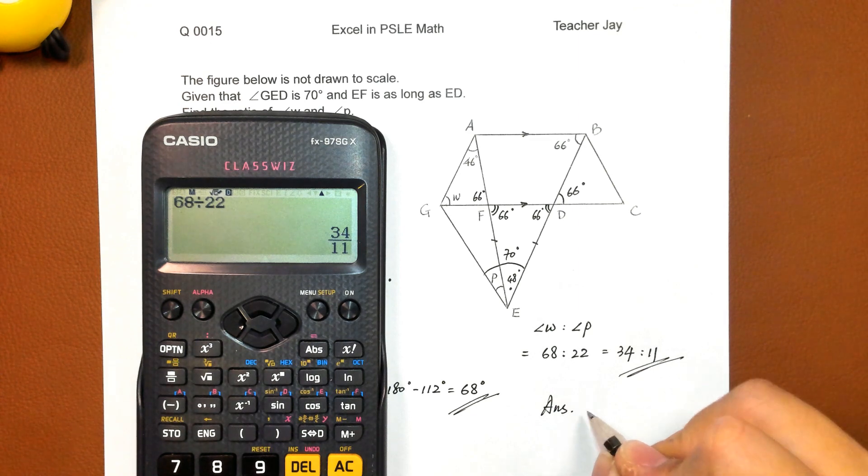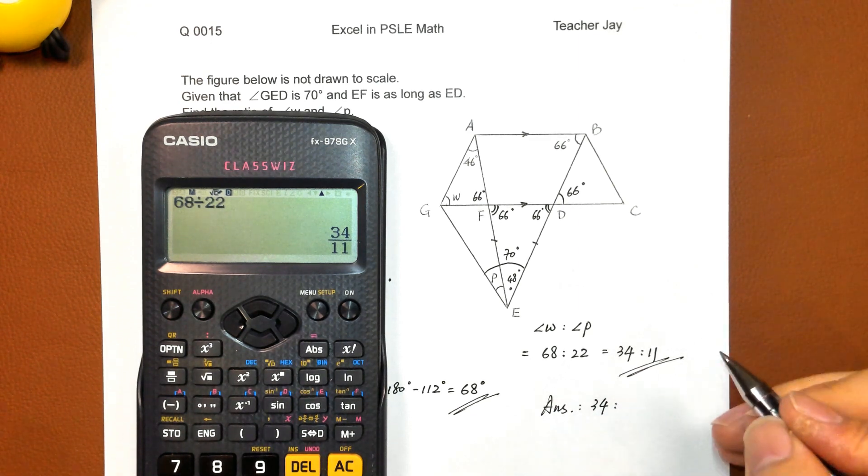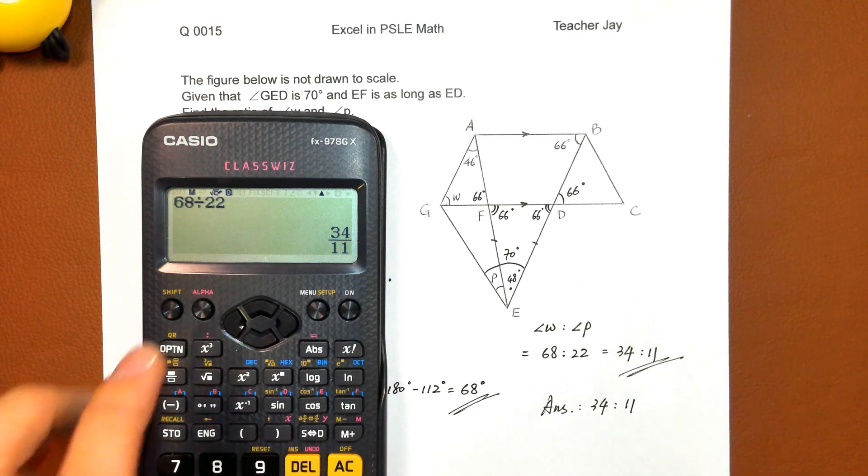So the final answer to this question, the ratio 34 to 11.